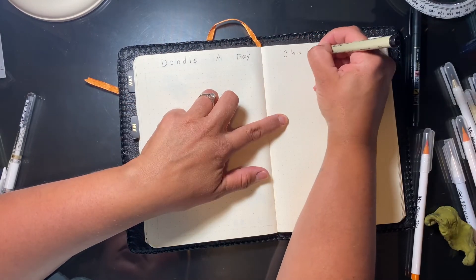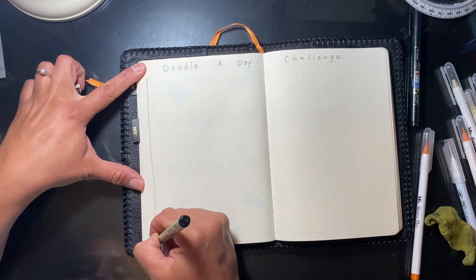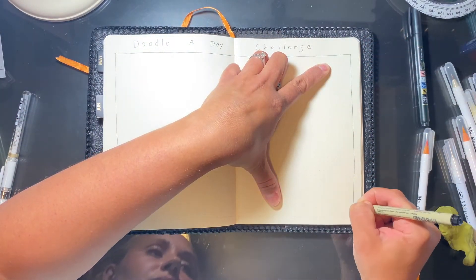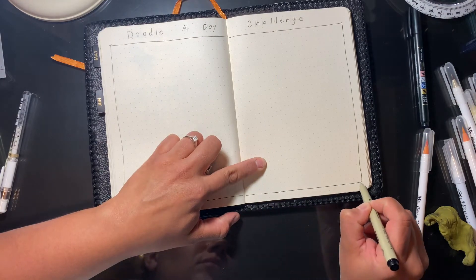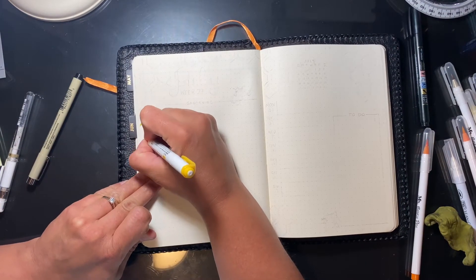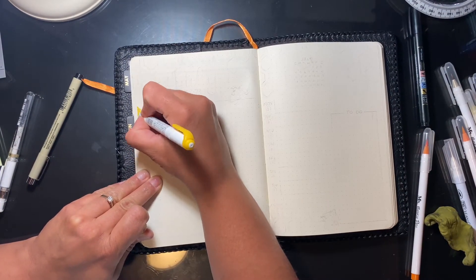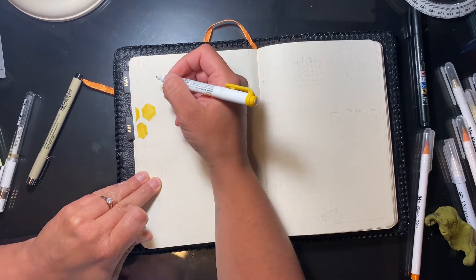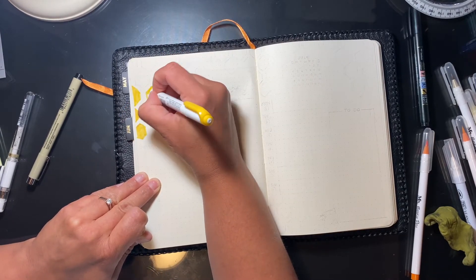This is my doodle a day page, which is the most boring spread in this bullet journal setup. That's just because I leave it blank so I can do a whole bunch of drawing in there. I never color it. I probably could, but I just don't. I just leave it black and white.